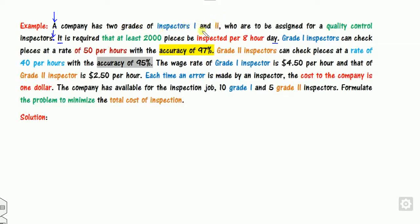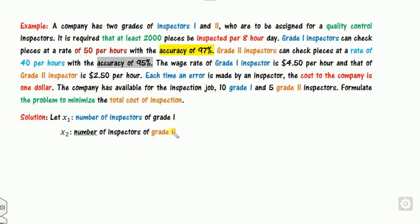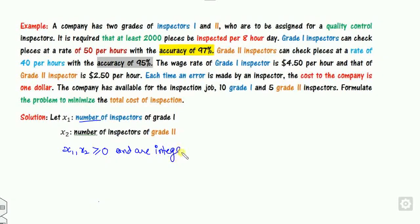A company has two grades of inspector, grade 1 and grade 2. The number of inspectors is not given in the first line. So I assume X1 is the number of grade 1 inspectors and X2 is the number of grade 2 inspectors. Since these represent persons, the minimum value is 0 or greater. They are integers because you cannot define 1.5 inspectors.